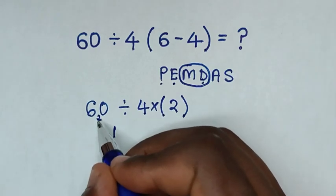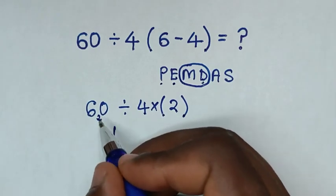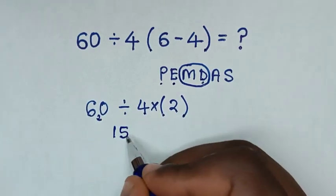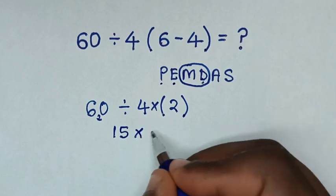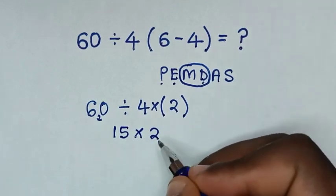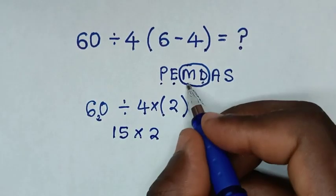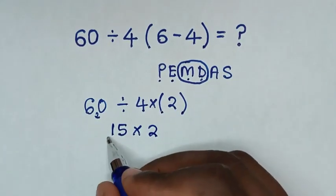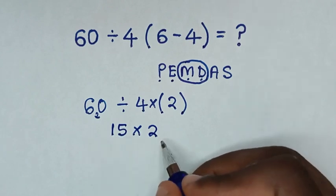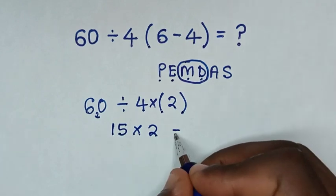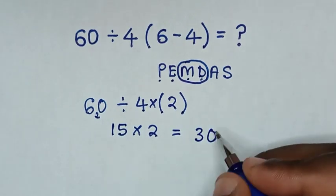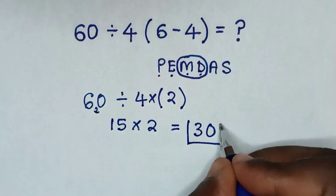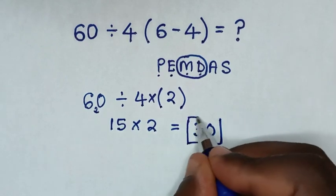20 divided by 4 is 5 — we are left with 15. Then times this 2. We deal with the multiplication of 15 times 2, which will be equal to 30. Therefore, this is our final answer.